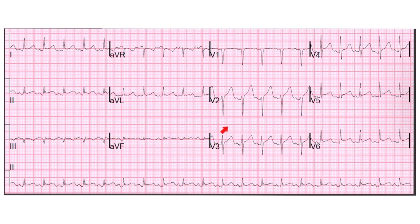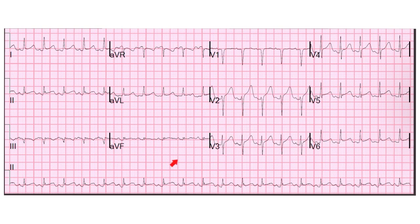At this point I look at the old EKG if available and compare. Then I look at the patient: if the patient is having active chest pain with these findings, I will be very worried about an acute MI. Or the patient may be febrile, hypotensive, or septic. So that's how quickly I run through these EKGs.